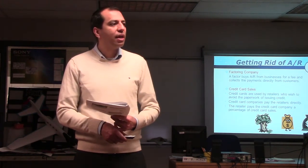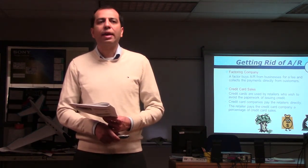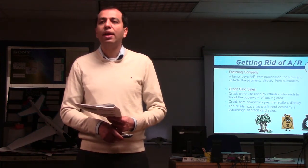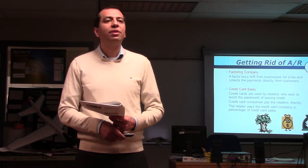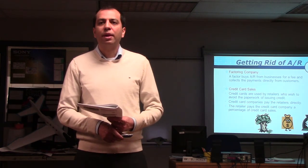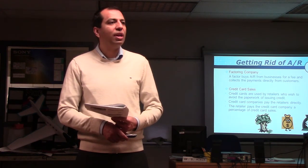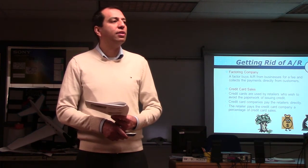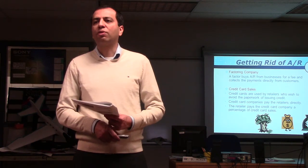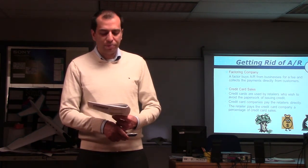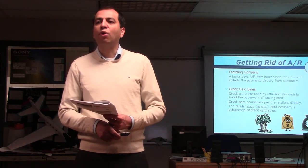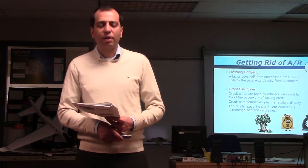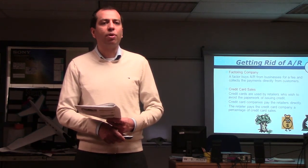Credit card companies are a big example of factoring. When you use a credit card at any business, the credit card company keeps 3–4% of what you spend. The business gets their money right away but only receives 96–97% of the sale; the other 3–4% is the credit card company's profit. That's how factoring companies, credit card companies, and similar businesses work. We'll stop here and continue with other types of receivables tomorrow.